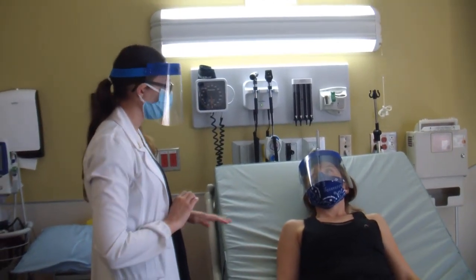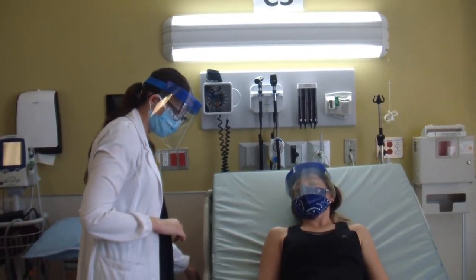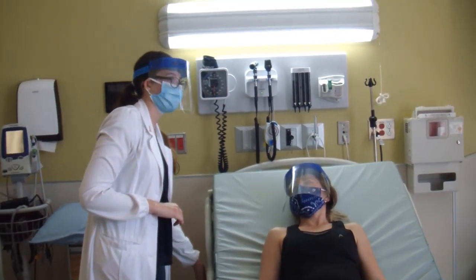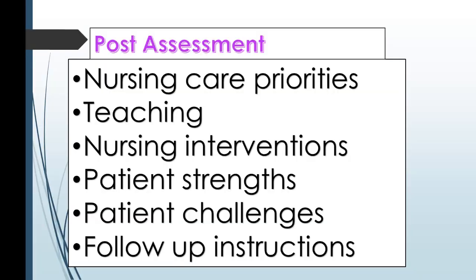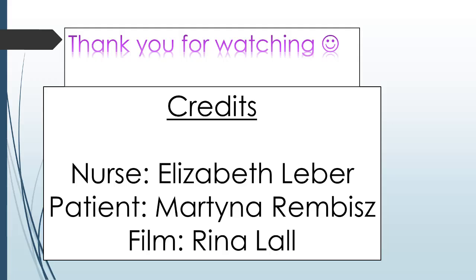After completing your health history and physical assessment, you will be able to identify your nursing care priority, provide relevant teaching and nursing interventions to help the patient with their situation. You should also be able to identify strengths and challenges that the patient has from the information gathered. Include follow-up instructions that demonstrate a collaborative approach with the patient. You always want to ensure that you and your patient have an equal understanding of the next steps. Make sure to thank your patient and ask them if they have any questions. Ensure they are comfortable and have the call bell in place in a hospital setting. Also make sure to bring the bed back to the lowest position, and if in a hospital setting, you may put the bed rails back up as well. Make sure to wash your hands after having been in contact with your patient and their environment.